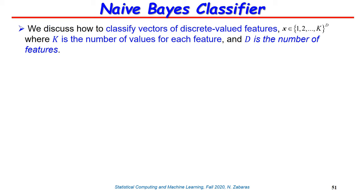Let's introduce what the Naive Bayes classifier is. We consider vector data with d number of features. Each feature can be of different origin: scalar quantities, binary features, or each vector can take capital K values. We will revisit this using categorical features in a few slides. For now, we assume vectors with d features and we are solving a classification problem.